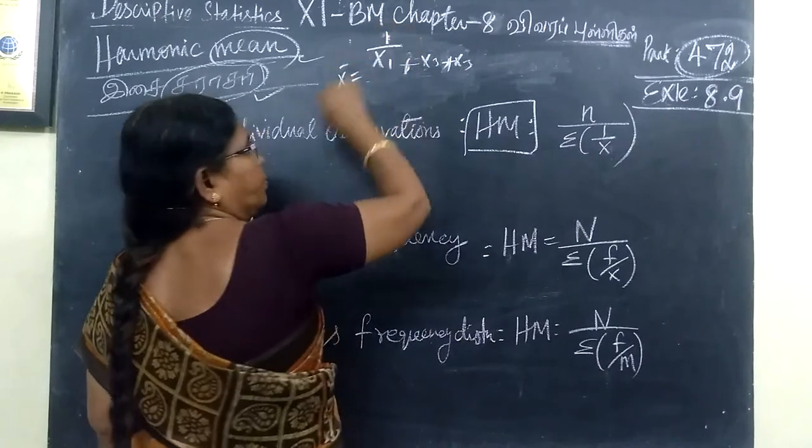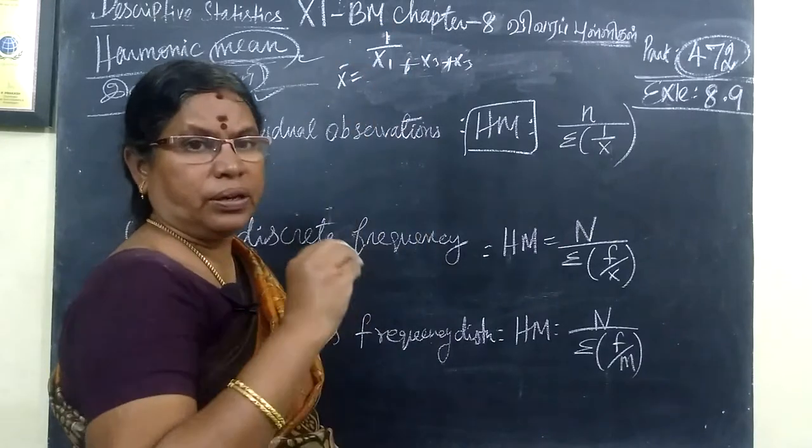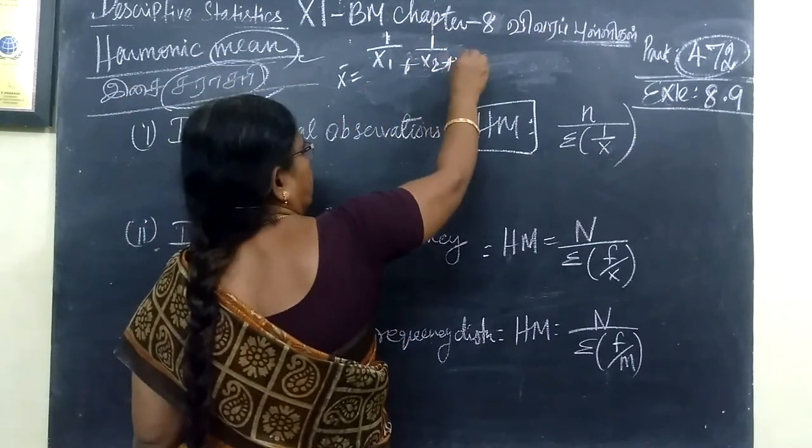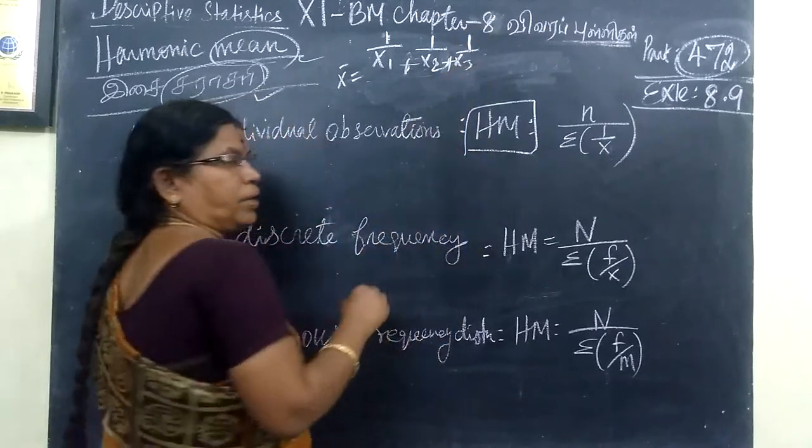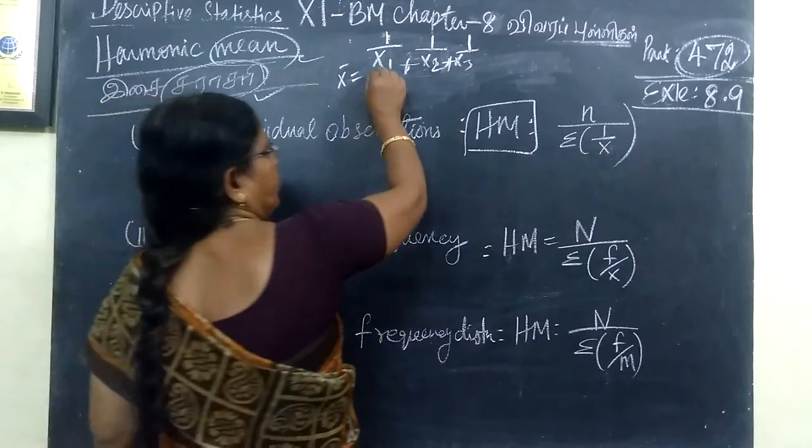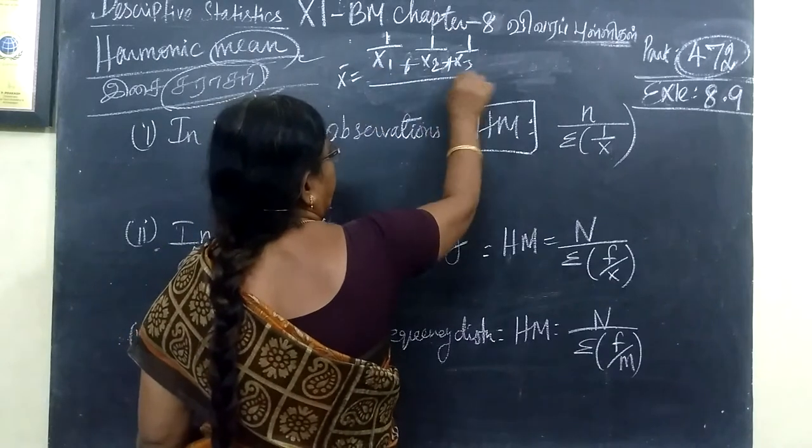This is reciprocal. Take 1 by x1, 1 by x2, then 1 by x3. This is the same way. So we add all these and divide by n.